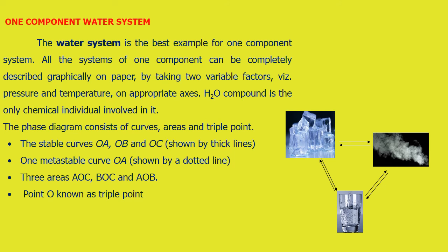One component water system is the typical example of a one component system. Here we are going to see steam — the gaseous phase — ice cube, the solid phase, and water in the liquid phase. All three phases are in equilibrium. How they vary with temperature and pressure is described by the phase diagram of a one component system. Here we are going to see areas, curves, and the triple point, where all three phases meet together.